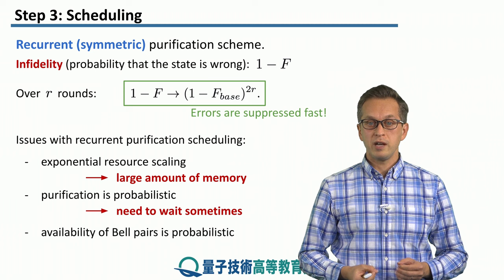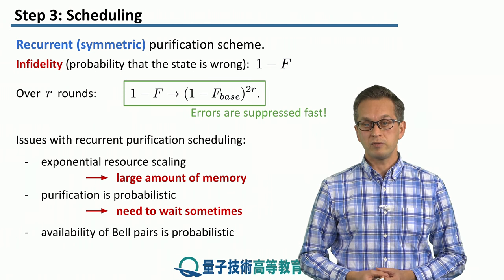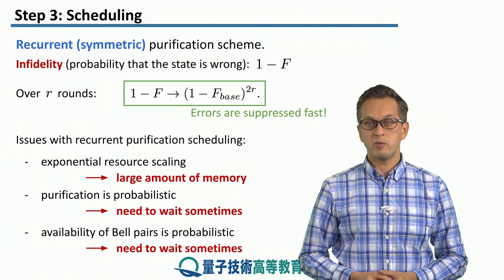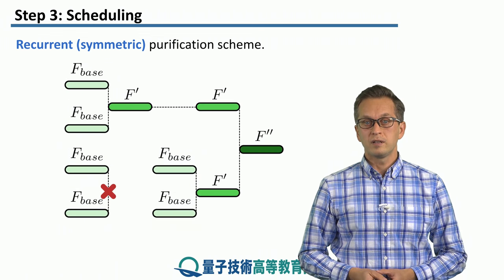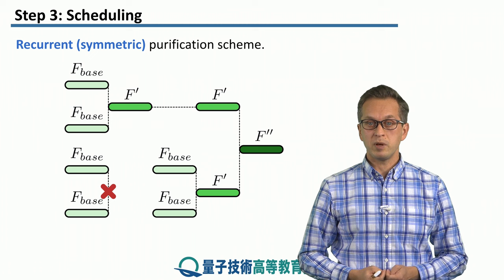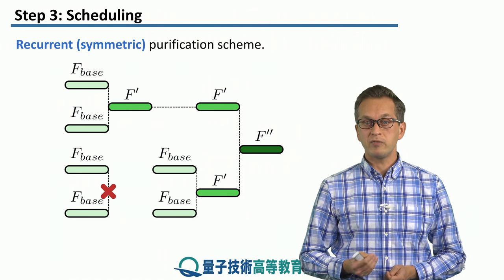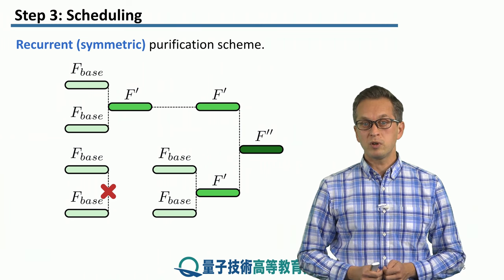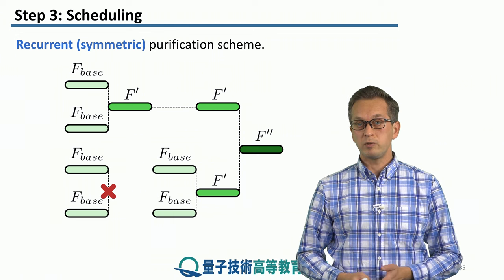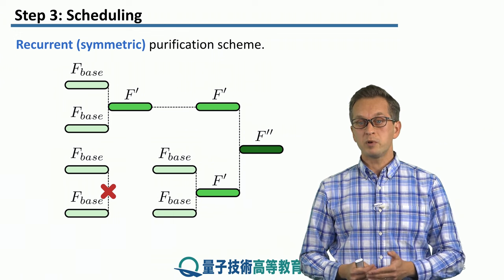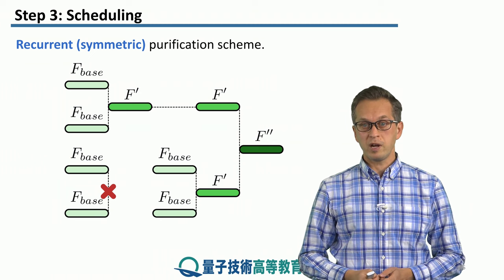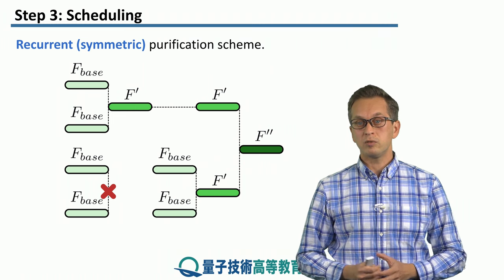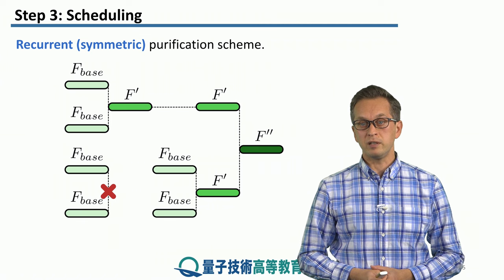Furthermore, creating the base Bell pairs is probabilistic in itself. Photons get lost, or they don't get detected, or they don't even get collected into the fibers. This introduces further waiting time. For example, here: we start with Bell pairs of base fidelity and purify the first one to get f_prime. But the purification on the bottom two fails. So we have to distribute two new Bell pairs of base fidelity, purify them to get f_prime, and then purify that with our initial f_prime to get f_double_prime.